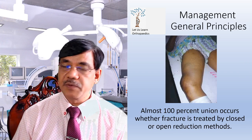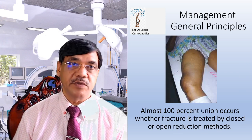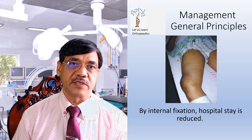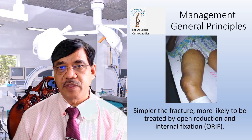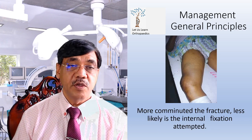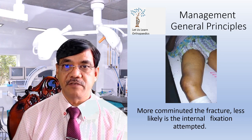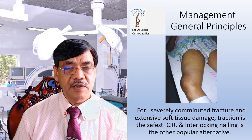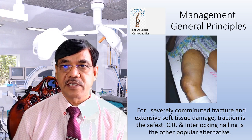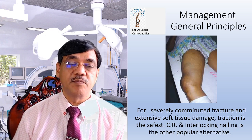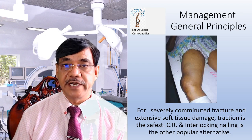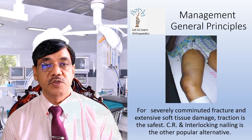Coming to the general principles of management, almost 100% union occurs whether the fracture is treated by closed or open reduction method. With internal fixation, the hospital stay is reduced. Simpler fractures are more likely to be treated with open reduction and internal fixation. More comminuted fractures are less likely to have internal fixation attempted. For severely comminuted fractures and extensive soft tissue damage, traction is preferred. Closed reduction and interlocking nailing is the other popular alternative nowadays, and surgeons are being trained to treat most fractured shaft femur using interlocking nails.